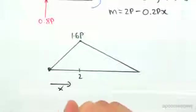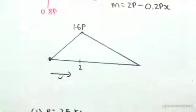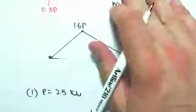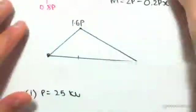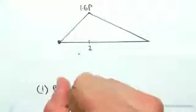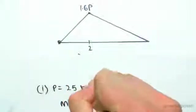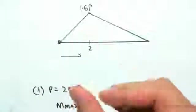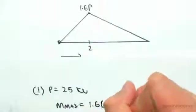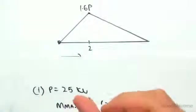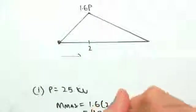Number one: we're dealing with P equaling 25 kilonewtons. So if P equals 25 kilonewtons, the maximum moment we're going to be experiencing on our beam, M_max, will equal 1.6P. So 1.6 times 25. If we solve that, we get 40 kilonewton meters.